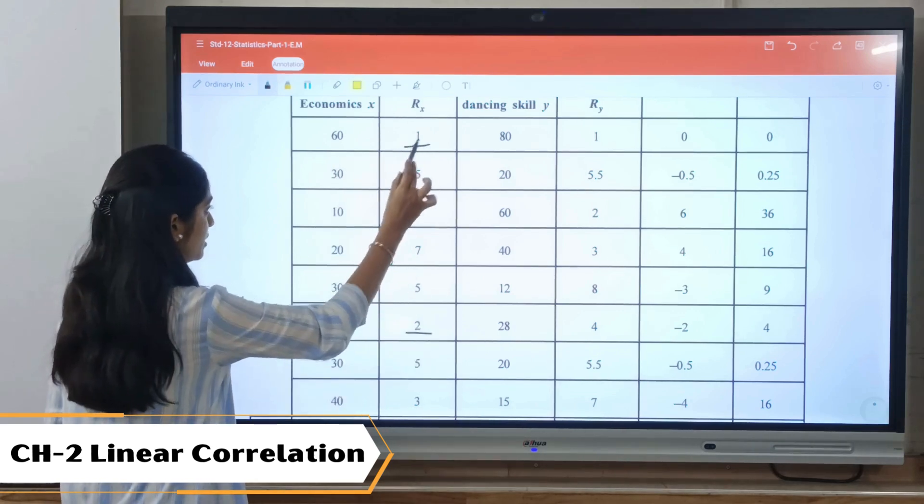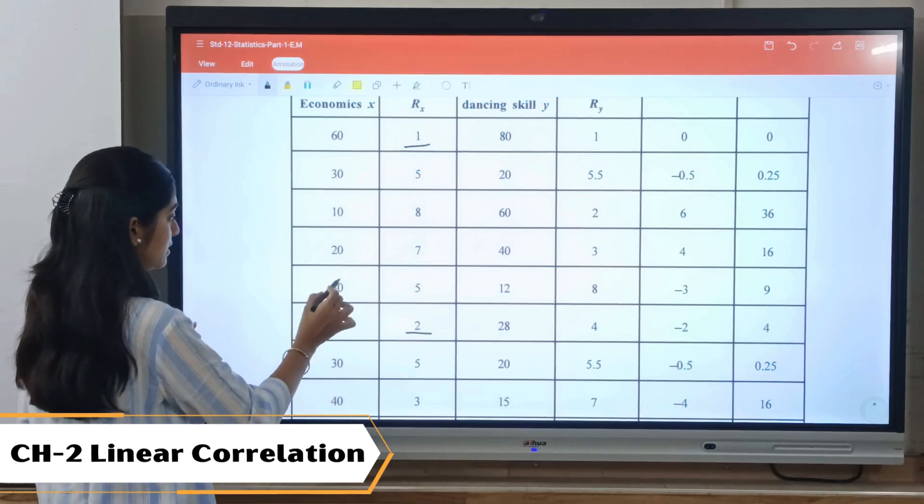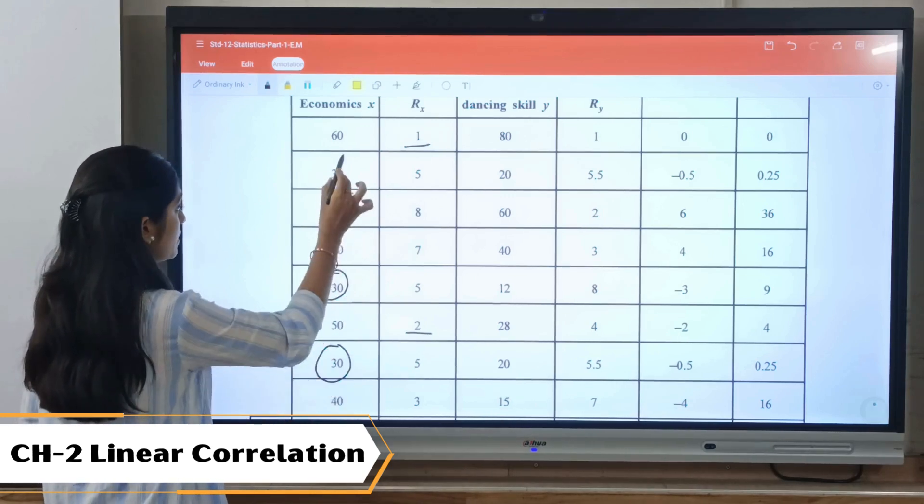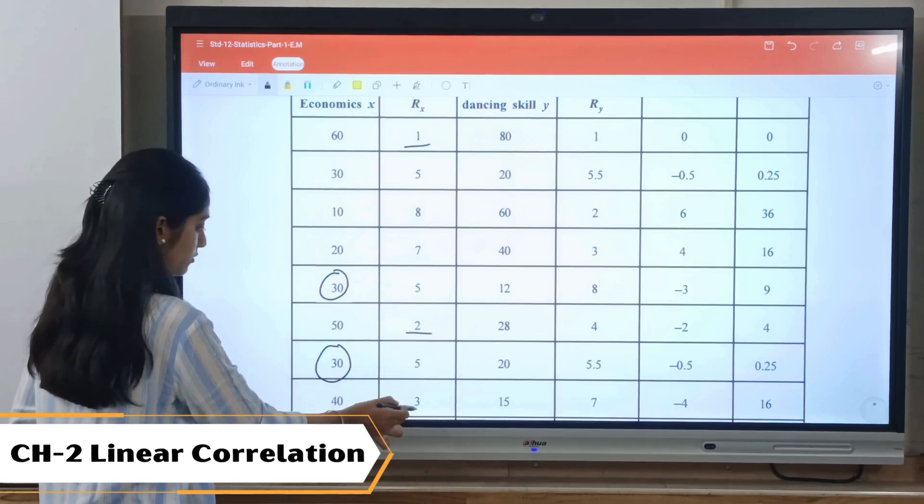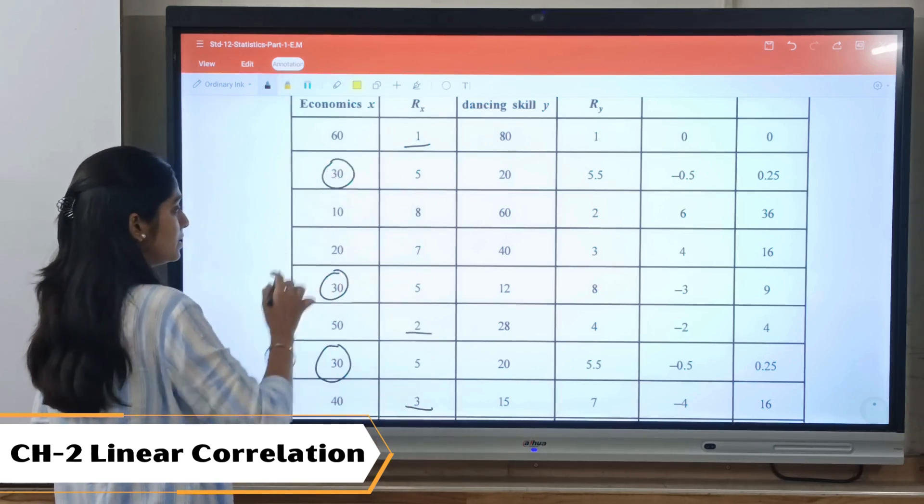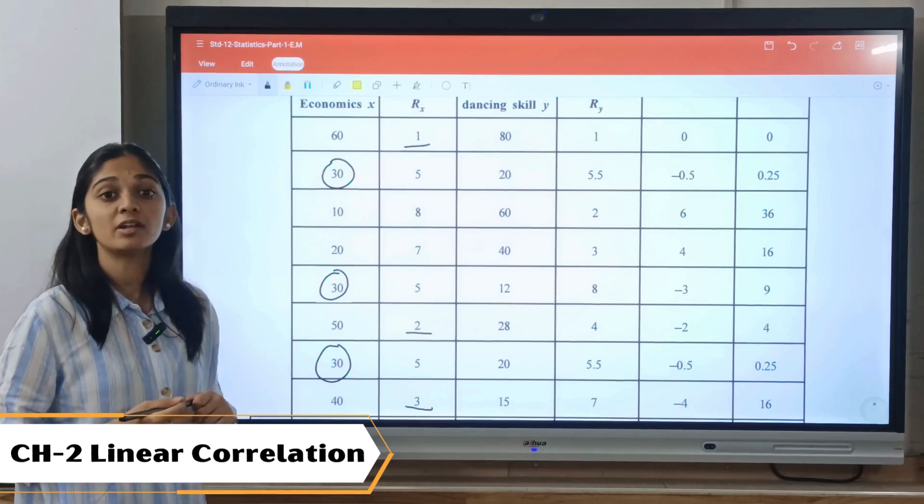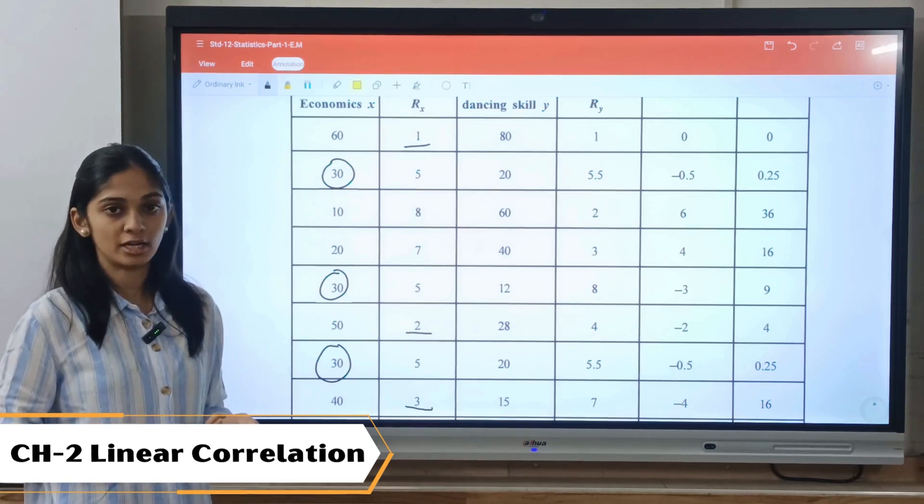Then we have 30, which is repeated. How many times? First, 40 will be given third rank. Then 30 is repeated three times. So whenever any number is repeating, we need to find out the average.